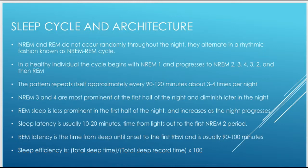In healthy individuals, the cycle usually begins with non-REM 1, then progresses through non-REM 2, 3, 4, 3, 2, and then finally REM. It's a process from non-REM 1 to 2 to 3 to 4 to 3 to 2, and then into REM. This pattern repeats itself approximately every 90 to 120 minutes, about three to four times per night, occurring in roughly 90 to 120 minute intervals.